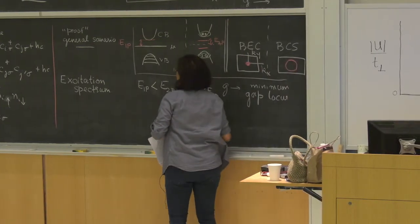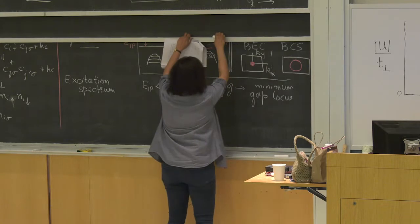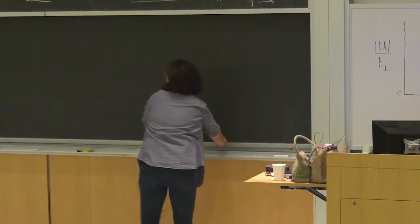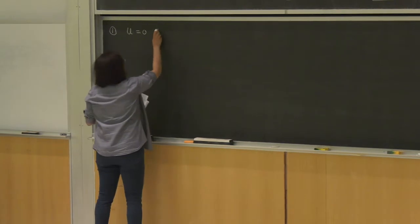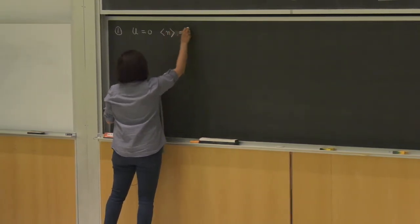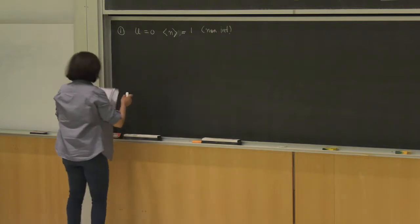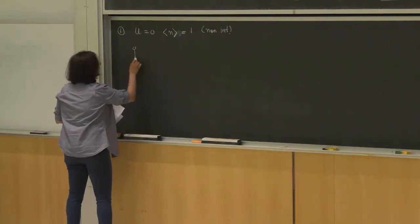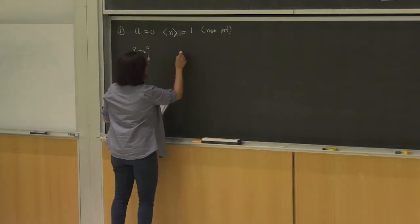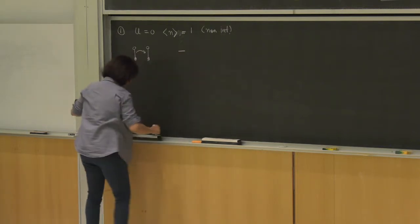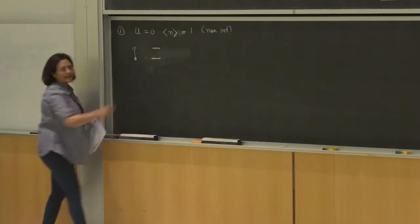The first limit is U is zero and n is one — non-interacting. What you get is that each rung gives you two levels: a bonding and an anti-bonding level. Now when you put many of them together, this energy scale is T-perp. Each of these levels will broaden by an amount T.